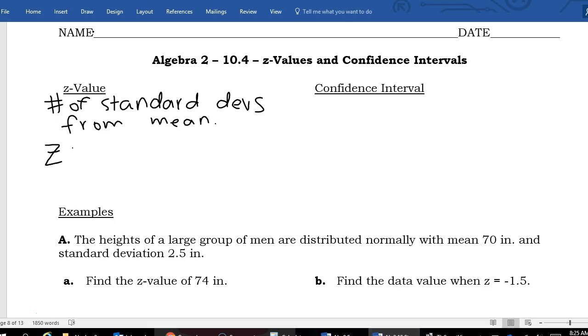To get your Z value you would take your data value, subtract your mean, and then divide by the standard deviation. This is your data value, this is your mean, and this is your standard deviation.